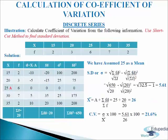Now we will calculate coefficient of variation in discrete series. We have to calculate it from the following information using the shortcut method to find deviation. Data is given: X values and frequencies are given. For the solution we will make a table of 6 columns. In the first column we write X: 15, 20, 25, 30 and 35, with 25 assumed as mean. In the second column we write frequency: 2, 3, 6, 7 and 2.